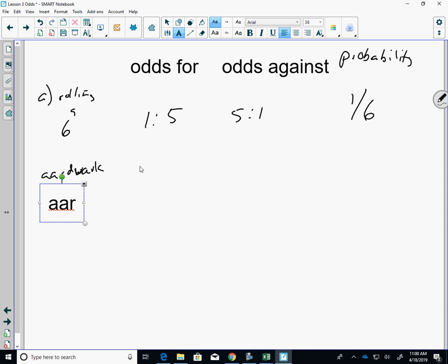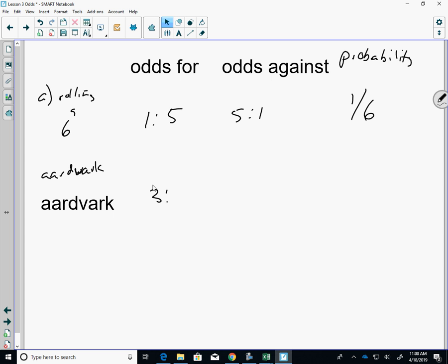I'm going to write aardvark. So it's A-A-R-D-V-A-R-K. How many A's are there? There's three. So odds for are going to be three to how many not A's are there? Five. One, two, three, four, five. Three to five. Odds against? Five to three. Probability of picking an A? Three good ones. Total of? Eight. Arthur would be proud.